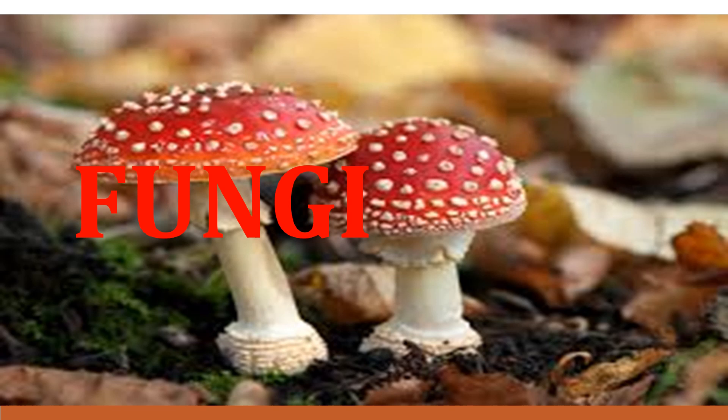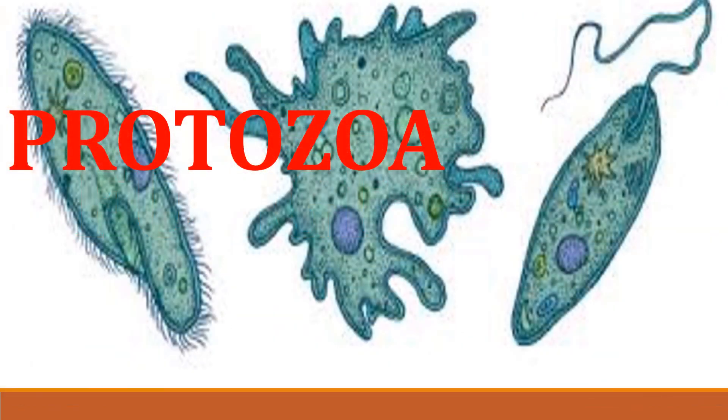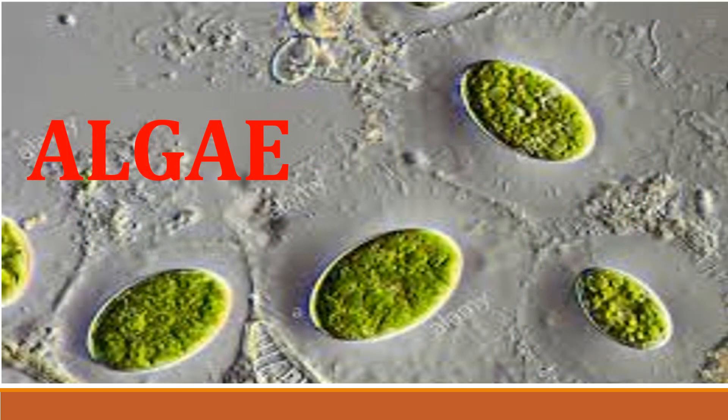Yeast, molds, and mushrooms — or fungi — have eukaryotic cells, meaning cells with a true nucleus. Most fungi are multicellular, and fungi obtain nutrients by absorbing organic material from their environment. Protozoa are unicellular eukaryotes that obtain nourishment by absorption or ingestion through specialized structures. Algae are unicellular or multicellular eukaryotes that obtain nourishment by photosynthesis, and they produce oxygen and carbohydrates used by other organisms.